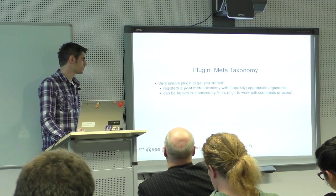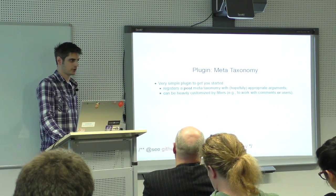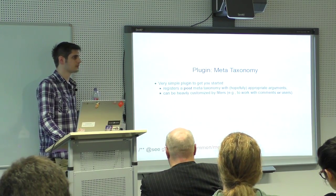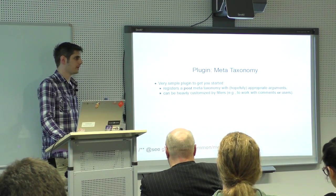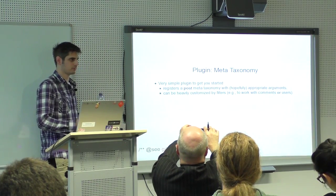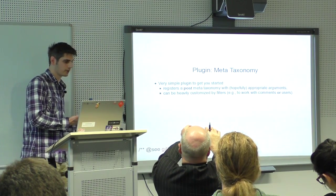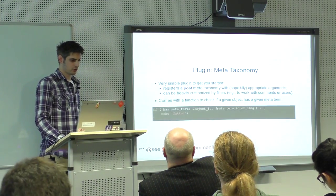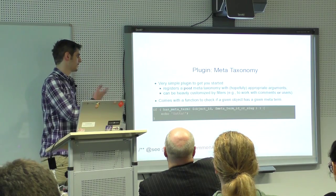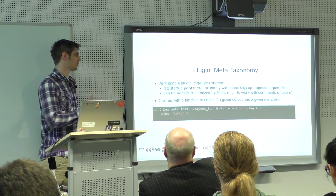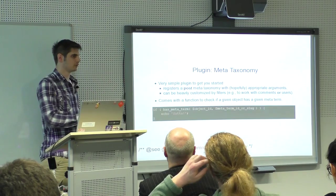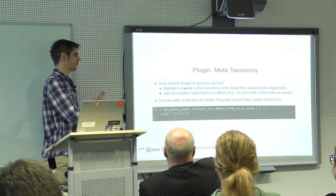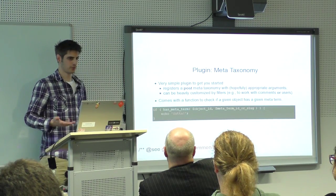A simple plugin to get you started: register a new taxonomy with appropriate arguments — it doesn't need a public archive, because I want the taxonomy for querying purposes only, and that can be customized. There is also a new helper function where you can ask if an object — user or comment — has some meta term. It's basically has_term, but you don't have to specify the taxonomy name.